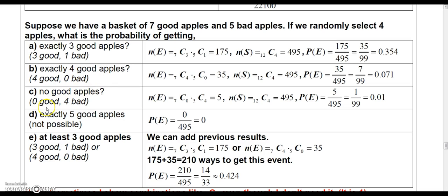What about no good apples? Well, the probability of that would mean I get zero good apples and four bad apples. Well, that would mean out of the good apples, I choose none. And out of the five bad apples, I choose four. And there's five ways that can happen. So, five out of 495 would be one out of 99, which is 0.01.